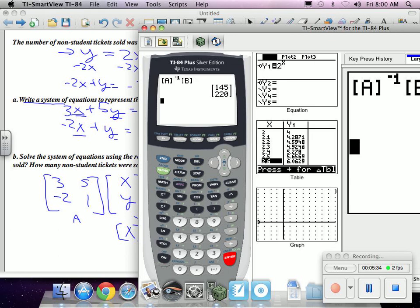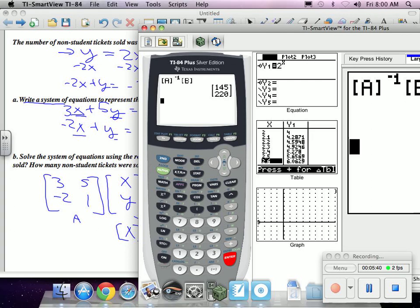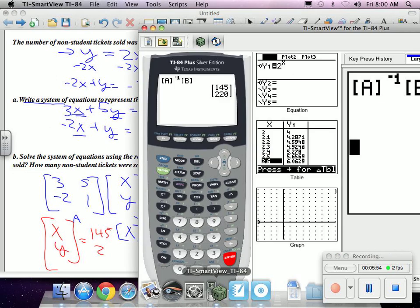Now I'm going to say quit. Now all I have to do is say second matrix A inverse second matrix B. And then I hit enter. And I can see that there were 145 that X, because they appear in this order, X equals 145 and Y equals, double check it, 220.